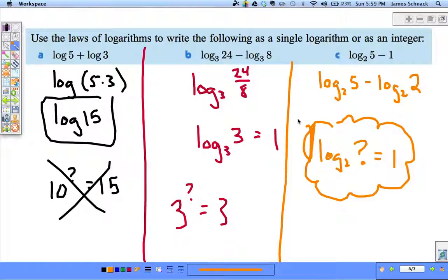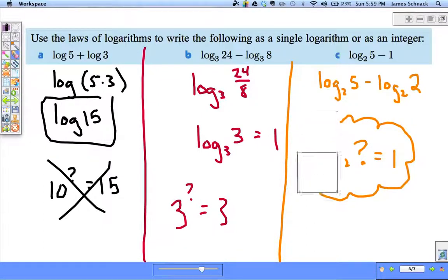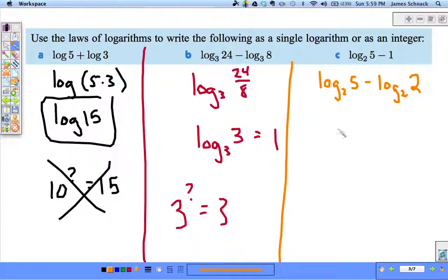Now, they are both log base 2. And because they're both log base 2, we can combine them together. And since we're subtracting, it's going to be a division, log base 2 of 5 halves. And we're done.